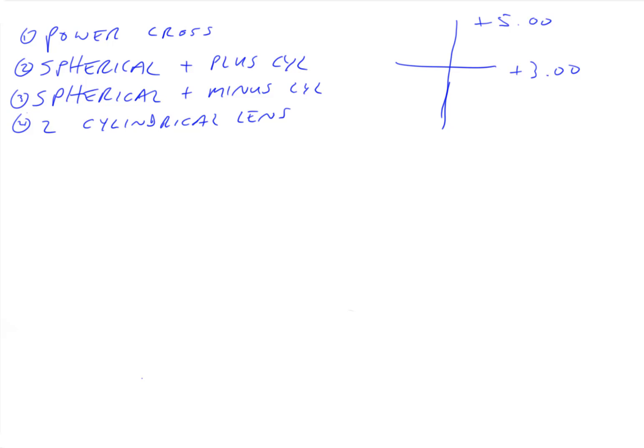I'm going to leave this up here for the next three lectures, just for consistency. So if we only have spherical and plus cylindrical lenses at our disposal, how do we build this Toric lens that has a plus three along the 180 degree meridian and a plus five along the 90 degree meridian?